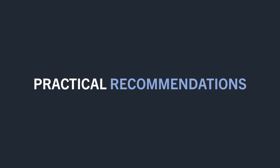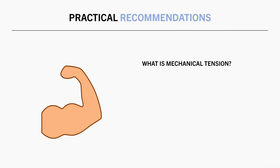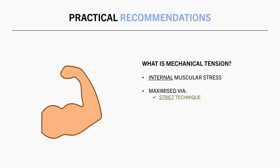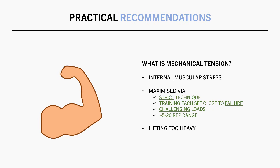Taking all this information into consideration, let's now establish some practical recommendations. Mechanical tension appears to be the primary mechanism responsible for stimulating muscle growth. The exact meaning of this concept is not entirely clear, but a good practical guide is to think of it as internal muscle stress. This means that trainees should try to maximise tension on the target muscle by using strict technique, taking each set close to failure, with challenging loads within the approximate 5 to 20 rep range. Furthermore, this doesn't necessarily mean that you should always use the heaviest load possible, as this may be less effective at stressing the target muscle if you are compromising technique or training with rep ranges that are too low.